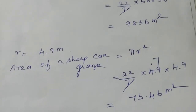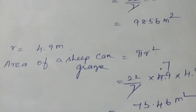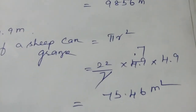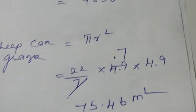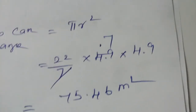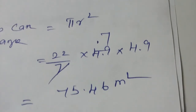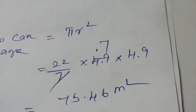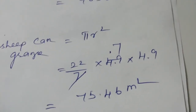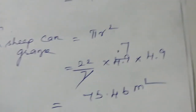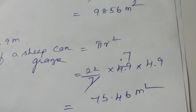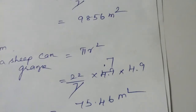Area equals pi r squared, so 22 by 7 into 4.9 into 4.9. Cancelling 7 into 4.9 gives 0.7, then multiplying the remaining values gives 75.46 meter squared. This is the area the sheep can graze — it can only roam within that circular area. Please copy this into your classwork. Thank you.